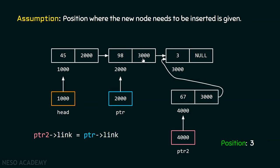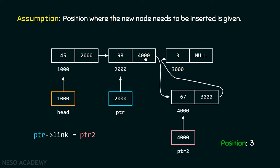The next step is to update the link part of this node by the address of the new node, using ptr->link = ptr2. Now, the order is very important. First, we have to update the link part of the new node, and then update the link part of the previous node. If we update the previous node's link first, then there is no way we can access the next node's address. That is why it is important to update the new node's link part first, and then the previous node's link part.